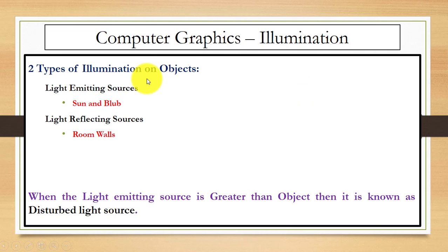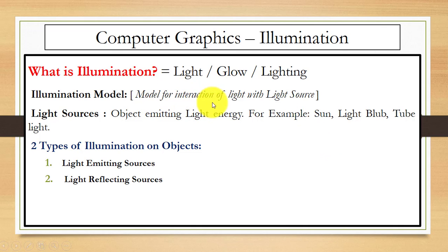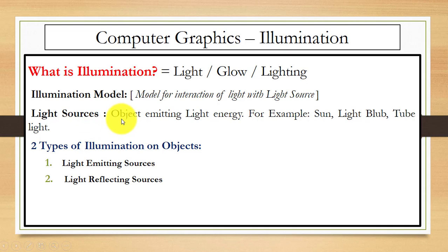Next, what is illumination? Illumination is light — or you can say glow or lighting. In the illumination model, we will understand the interaction of light with different light sources. First, we will understand about different light sources.